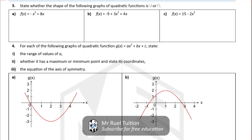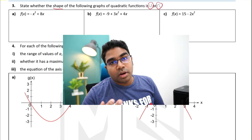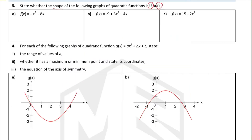Let's try some questions. State whether the shape of the following graphs is a downward curve or an upward curve. All we have to do is look at the value of a — the coefficient of x squared. In this case, we only see a negative sign in front, which means a is negative 1. Therefore a is negative, less than 0, and we have a frown — that's all we need to determine the shape.